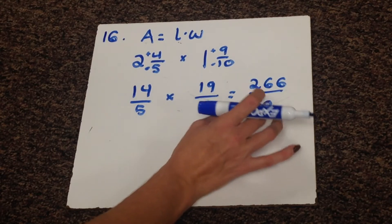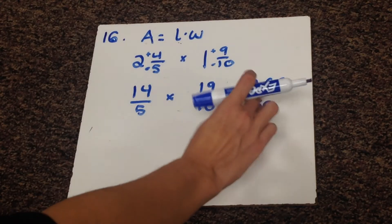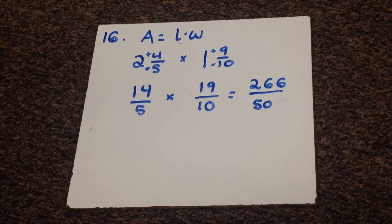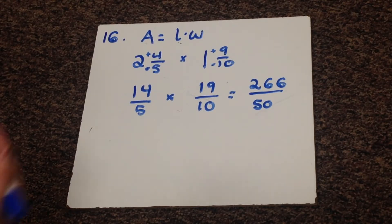You can start by reducing, or you can just right off the bat see how many times 50 goes into 266, and then you can reduce the fraction on the end. So we'll go this way first. 50 goes into 250 five times.